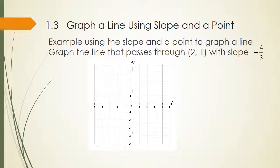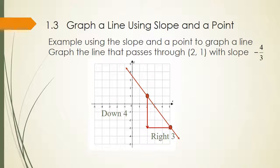Using the slope and a point, graph the line that passes through (2, 1) with slope negative 4 thirds. First, plot the point (2, 1). Then use the slope: since it's negative, go down 4 and right 3 to get the next point. Connect the two points to make the line.